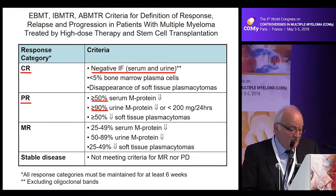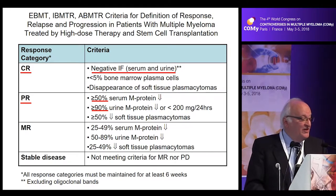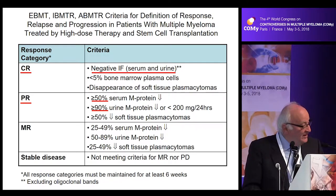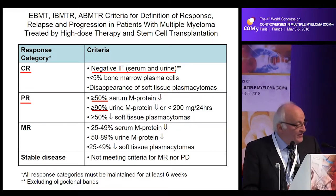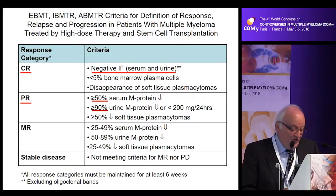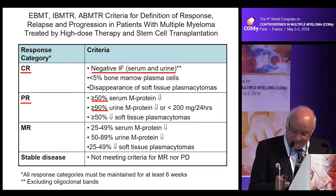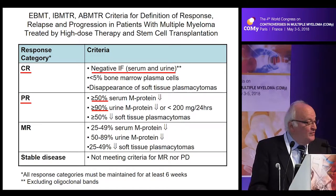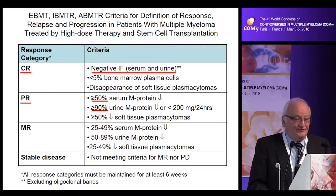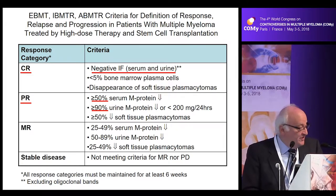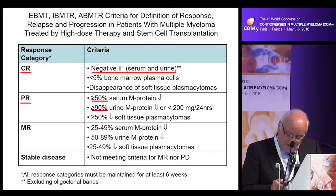Minimal response requires at least 25 to 49% decrease in the serum M-protein, 50 to 89% in the urine, and 25 to 49% in soft tissue decrease. All this should be maintained for at least six weeks in order to exclude transient responses.